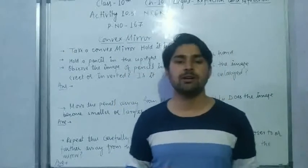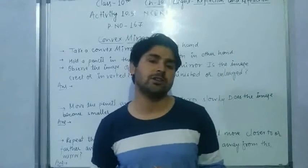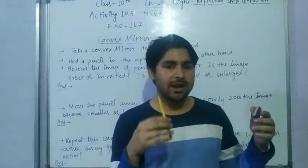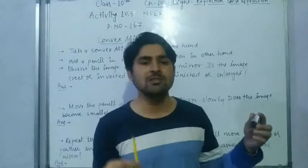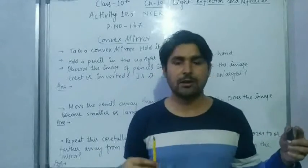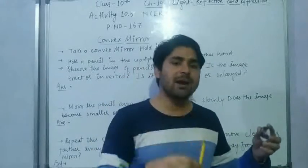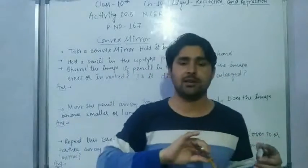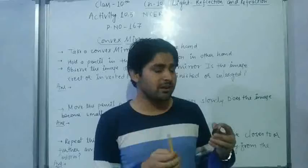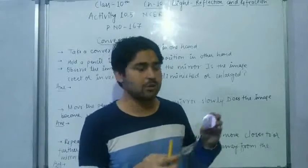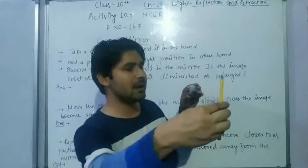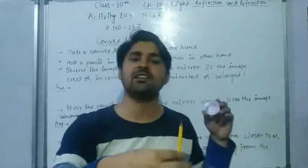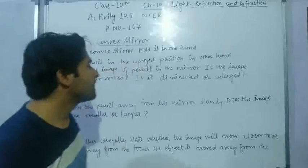Another thing that will help you identify a convex mirror: whenever you place any object at any distance from a convex mirror, its image will always be erect. Erect means the image will look upright — it will never appear inverted. That is how you can identify a convex mirror.